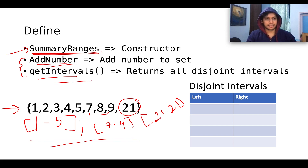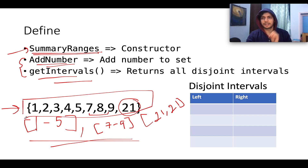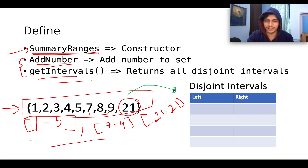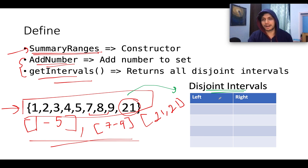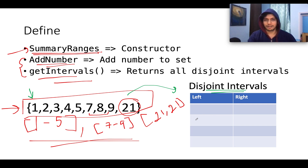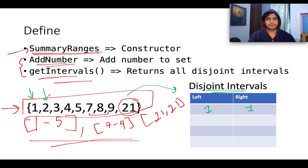Let's forget the input problem for a second — if this data set is given, can you generate the disjoint sets? Let's try to transform this input into disjoint sets. We'll think simple: since the question says generate disjoint intervals, we'll create an array with a left part and a right part. Starting the iteration, the first element is 1. Since there are no intervals present yet, we simply add it: left = 1, right = 1.